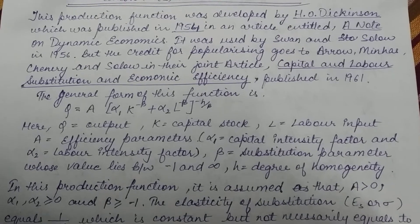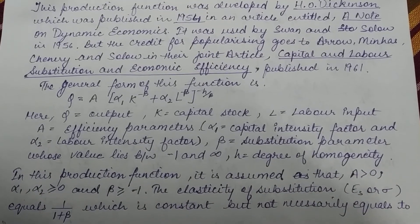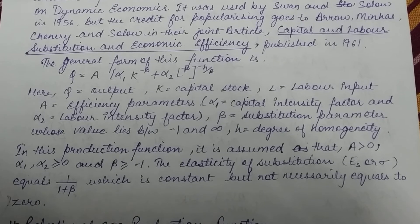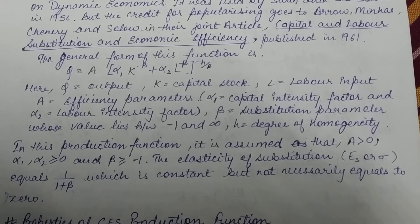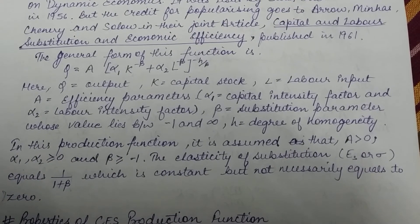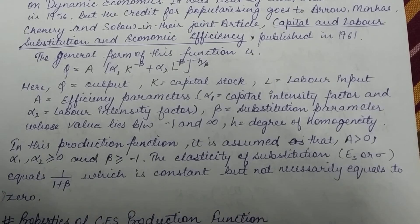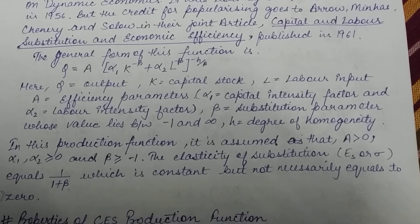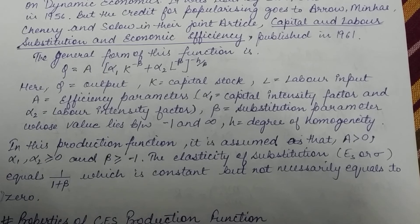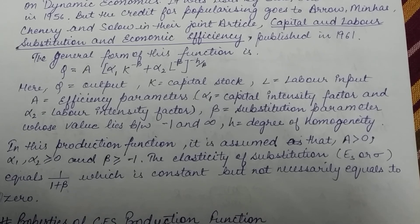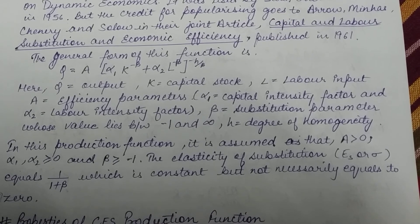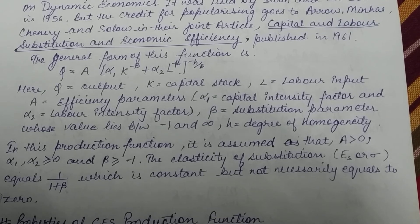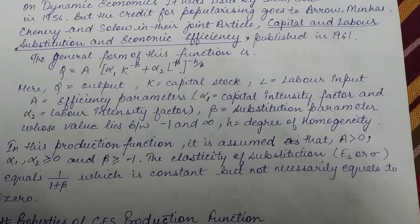In the production function it is assumed that A is greater than 0, alpha-1 and alpha-2 are greater than or equal to 0, and beta is also greater than or equal to minus 1. The elasticity of substitution, also represented as Es, equals 1 upon (1 plus beta), which is constant but not necessarily equal to 1.